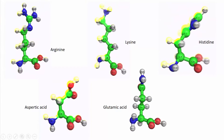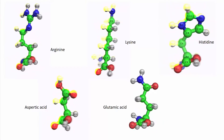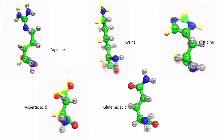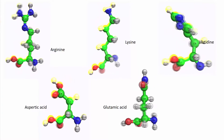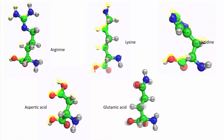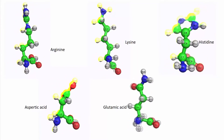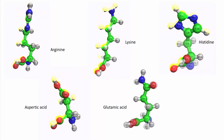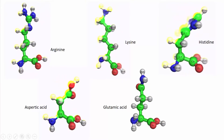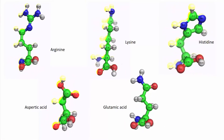Five amino acids have charged side chains. Two of them are positively charged at physiological pH: they are lysine and arginine. Histidine is special — it carries an imidazolium moiety and ionizes only at pH 6. Amino acids with negatively charged side chains are aspartic acid and glutamic acid.